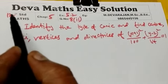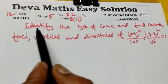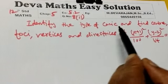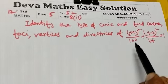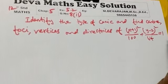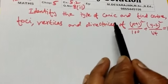Hi students, this is Deva. Now you are going to see Chapter 5, Exercise 5.2, Question 8. Identify the type of conic and find the center, vertices, and foci. The equation is (x+1)²/100 + (y-2)²/64 = 1.